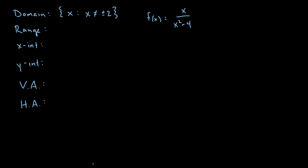The range: for this function you can get pretty much all y values — depending on what x is, you get positive and negative y values as big or as small as you want, so the range is all real numbers. The x-intercept is where y equals zero, which only happens when x is zero, making the numerator zero — so the x-intercept is (0, 0). The y-intercept occurs when x equals zero: zero divided by zero minus four is zero, so the y-intercept is (0, 0) as well.